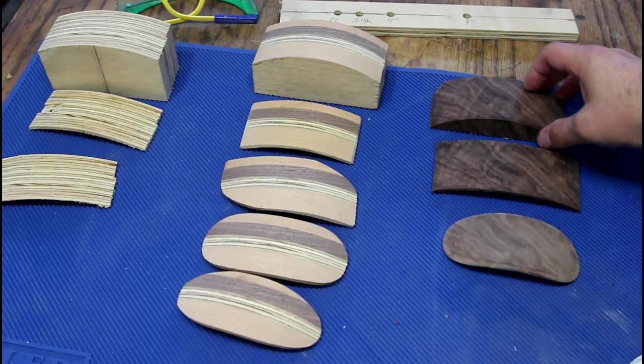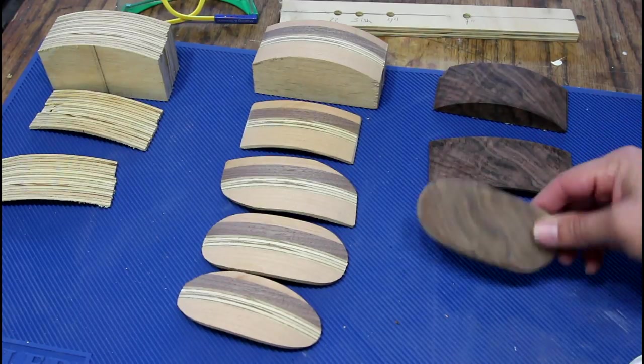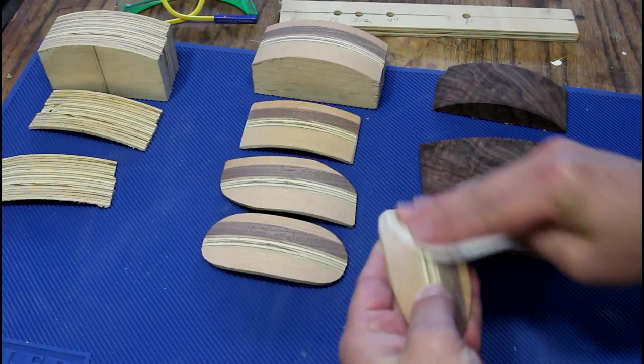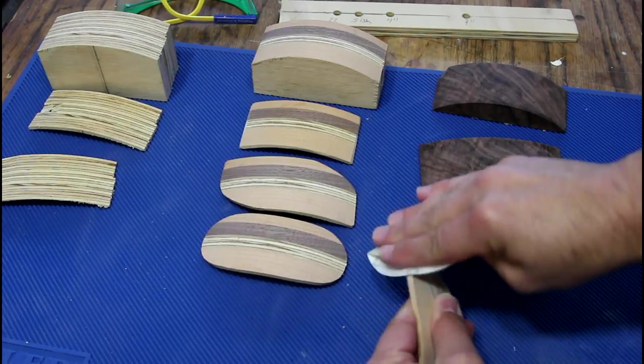And then I also took a block of walnut that I had and made a couple passes on it. It comes pretty nice off the bandsaw if you've got a sharp blade, which I do.